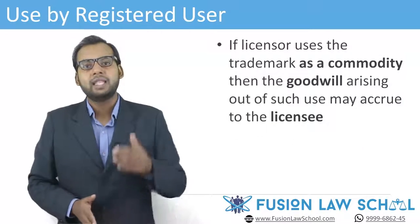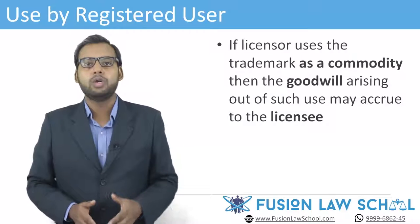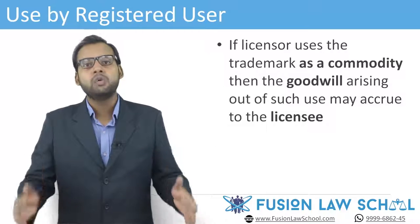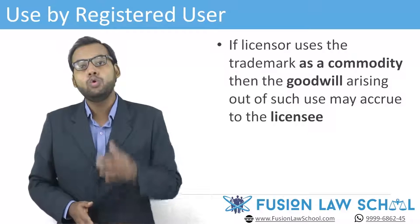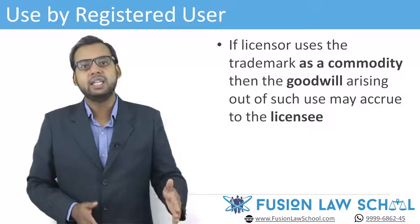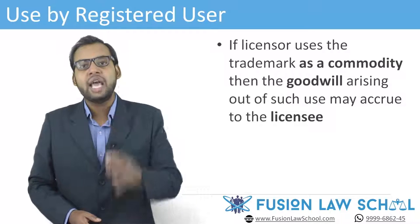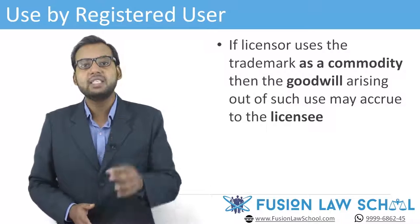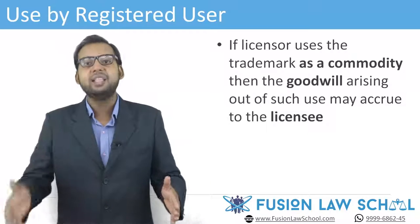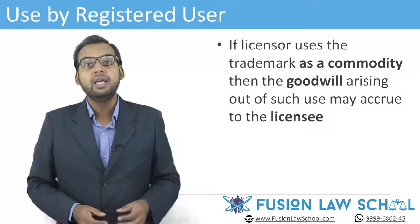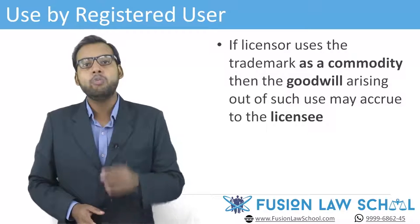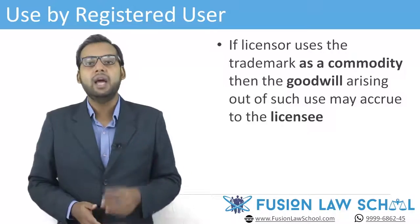In the event that a licensor uses the trademark as a commodity without establishing a trade connection between the licensor and the product, the goodwill arising out of such use may accrue to the licensee. In such a situation and in case of a dispute between the licensor and the licensee, the licensee shall be able to challenge the validity of the licensed trademark, submitting the plea that the trade connection between the licensor and the licensed trademark is missing, that the licensee has accrued rights over the trademark, and that the licensed trademark is now pointing toward two sources, which is forbidden under law.